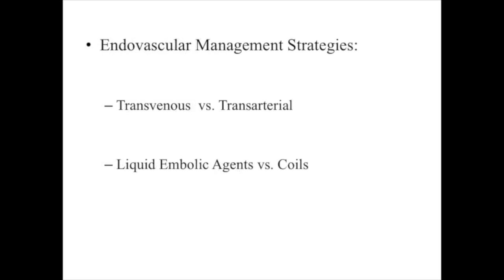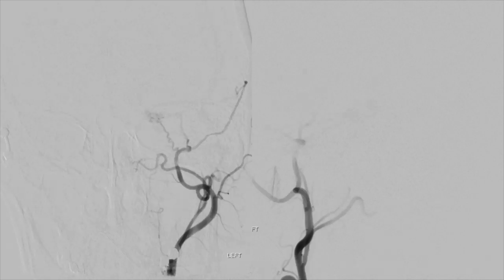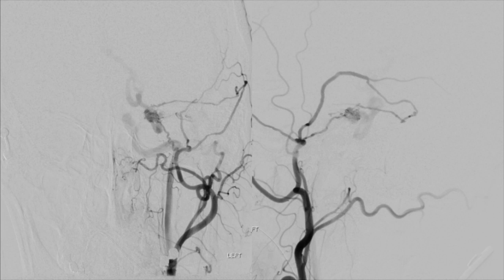The endovascular treatment option has several variables in regards to the type of access, catheters, and embolic agents that may be used. Ideally, the endovascular treatment of this dural AV fistula would involve a transarterial route and Onyx embolization, trying to achieve sufficient nidus penetration and obliteration of the fistula with low morbidity and risk. We started with the transarterial approach through the posterior meningeal feeders on the left, which we thought was a safer approach and provided an opportunity to reach the nidus for occlusion.